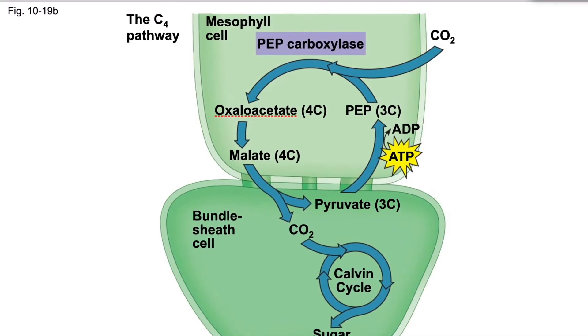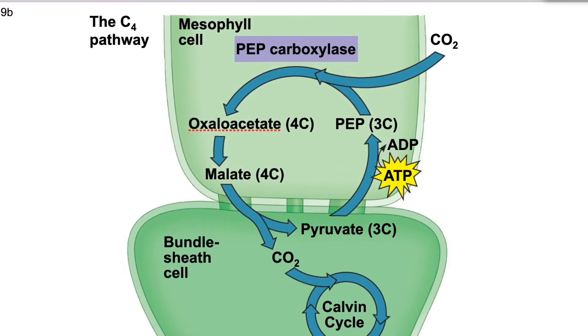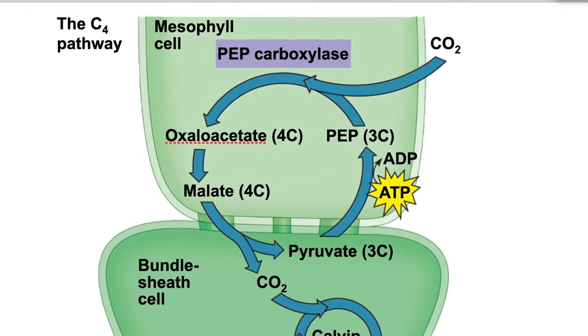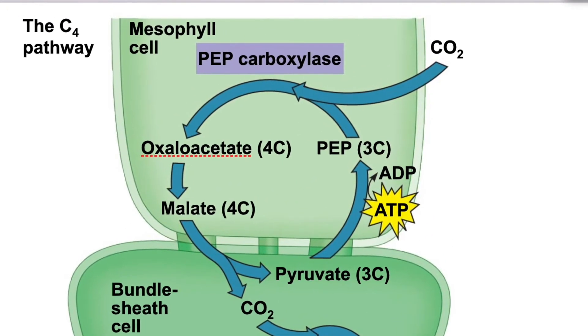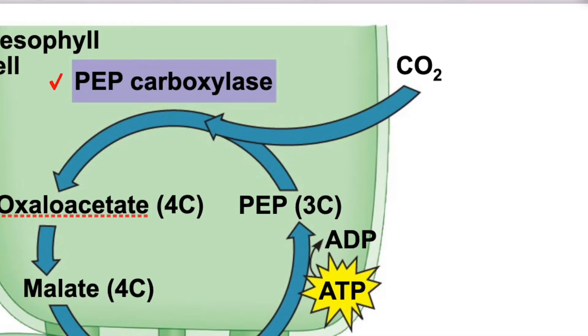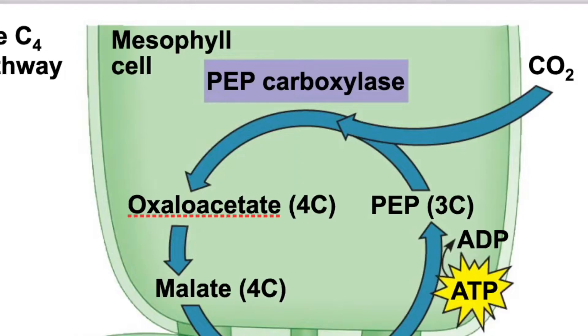In the mesophyll cell, we have carbon dioxide and oxygen. With the stomata closed, we might see high levels of oxygen and relatively low levels of carbon dioxide. But that's okay, because the enzyme used for the initial carbon fixation in the mesophyll cell is called PEP carboxylase. You can notice right away that the name of this enzyme indicates it only carboxylizes and does not oxygenate. What it does is take a molecule called PEP and adds carbon dioxide, forming what we call oxaloacetate or oxaloacetic acid.